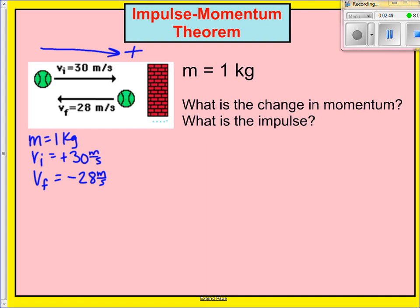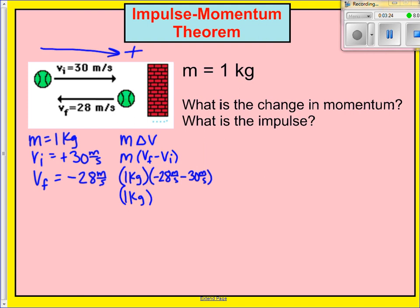Now we solve for the change in momentum. Remember, change in momentum is mass times delta V, and delta anything is always final minus initial. My mass is one kilogram. My final velocity is negative 28 meters per second, minus my initial velocity of positive 30 meters per second. So that's one kilogram times a change in velocity of negative 58 meters per second. My change in momentum, delta P, is negative 58 kilogram meters per second.